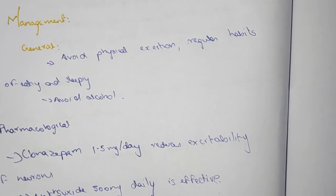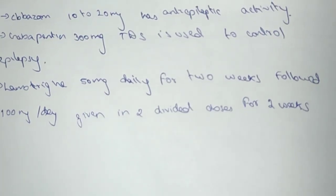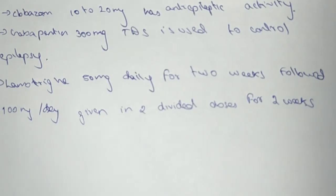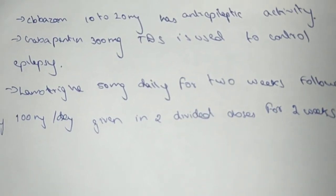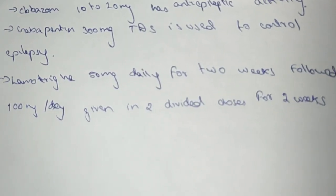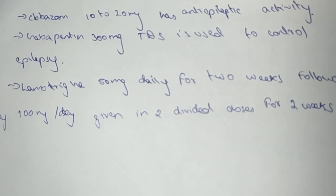For temporal epilepsy patients, clobazam 10-20 mg has anti-epileptic activity and gabapentin 300 mg twice a day is used to control epilepsy.